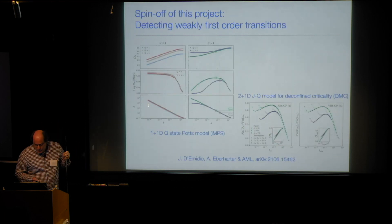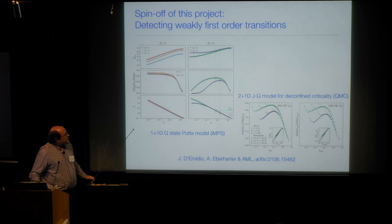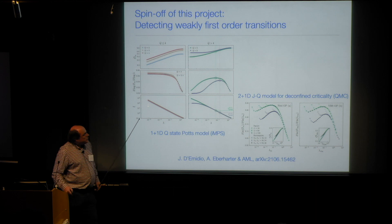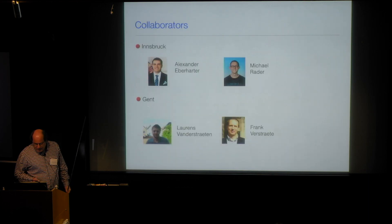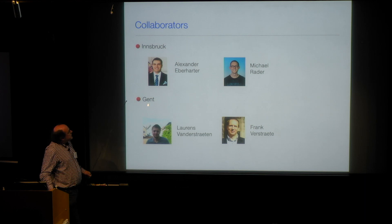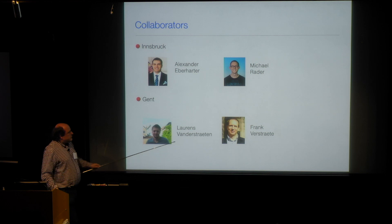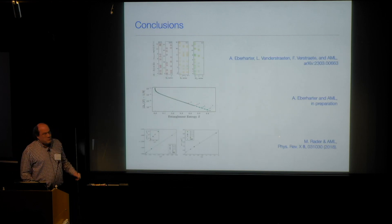I'm done with my time. To advertise: we have a preprint using relevant perturbations to diagnose weakly first-order phase transitions — applying the technology with QMC, we find that the JQ model on the square lattice is likely weakly first-order and not a deconfined critical point. I skipped the 2D IPEPS part — please ask me in the break or read the paper. Acknowledgments: Alexander Eberharter as PhD student did most of the numerical work; Michael Radher worked on the IPEPS; Lawrence and Frank Verstraete were involved in the speed of light project.